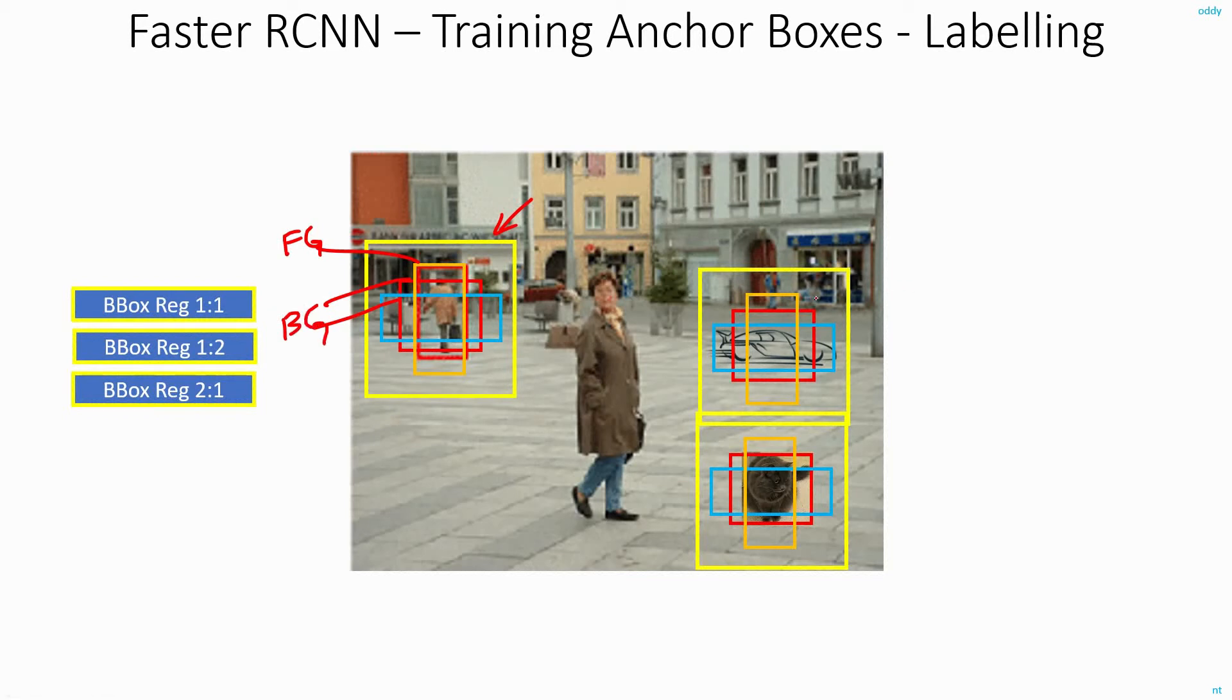Similarly, in this box I will label this blue box as foreground and the rest as background. Here the red box will be labeled as foreground and the rest will be labeled as background. Please note that here I am showing just three anchor boxes for clarity. Actually there will be nine different anchor boxes. So this way, by doing the labeling and training these bounding box regressors, each of these regressors will become good at predominantly identifying the square, then the wide, and the tall regions of the image.